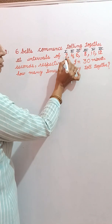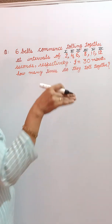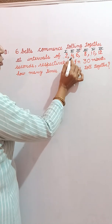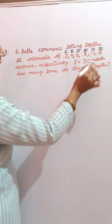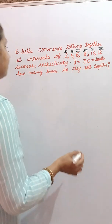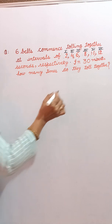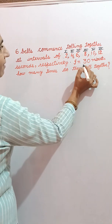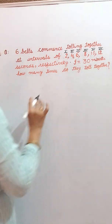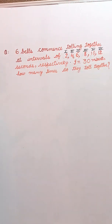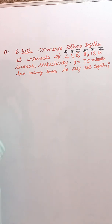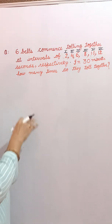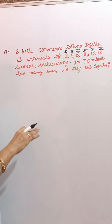So we have: two seconds, four seconds, six seconds — and we have to find in 30 minutes how many times they toll together. For that, we will have to find out the LCM.